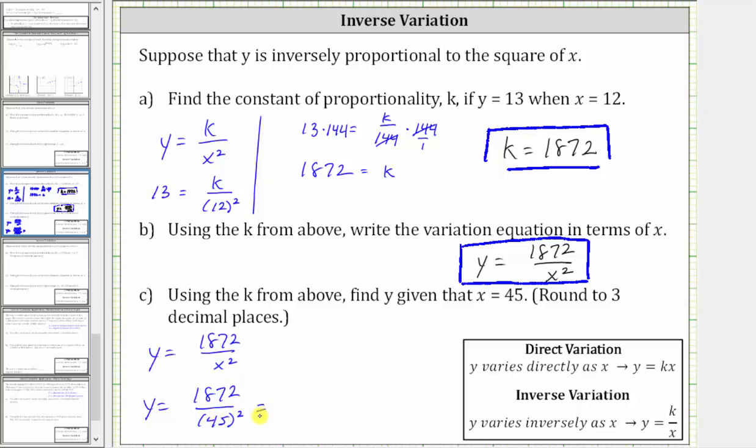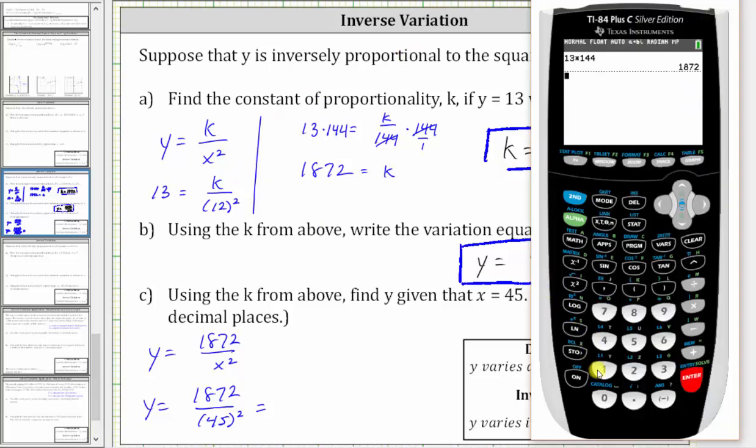And now let's go back to the calculator. We have 1,872 divided by 45 squared. We're told to round to three decimal places. And notice how there's a four in the fourth decimal place. And therefore, y is approximately 0.924.